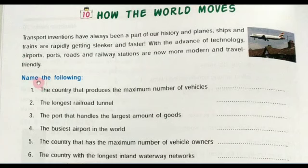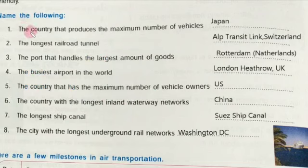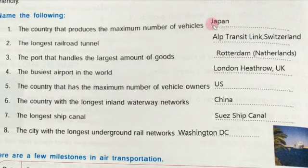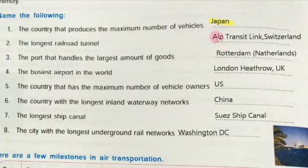Have you seen the bus station of Vadodara? It is very modern and very attractive. Now name the following. First: the country that produces the maximum number of vehicles — it is Japan. Japan produces the maximum number of vehicles. Then the longest railroad tunnel, which is situated in Switzerland, and its name is Alp Transit Link. The port that handles the largest amount of goods is Rotterdam, situated in the Netherlands.